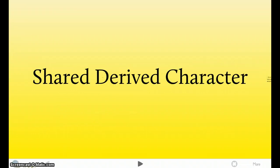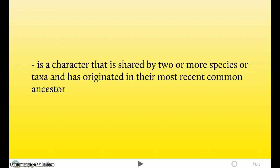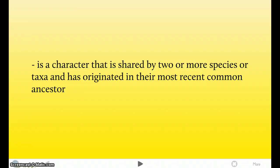The Shared Primitive Character, also known as the Synapomorphic, is a character that is shared by two or more species, or taxa, and has originated in their most recent common ancestor. That's key, that is the most recent common ancestor.